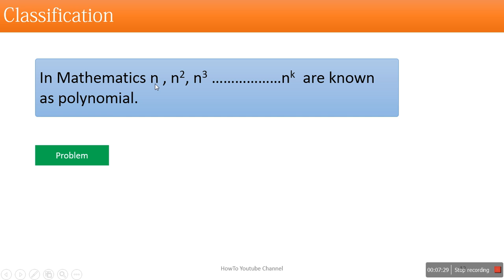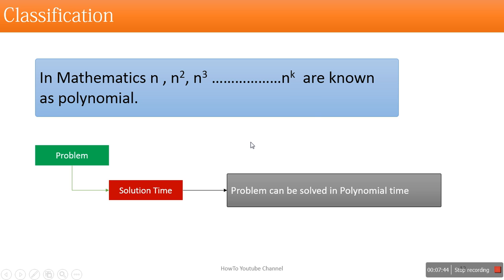So if a complexity is represented like n, n squared, n cubed, or n to the power k, these are known as polynomial. If a problem can be solved in polynomial time — like the first problem we saw, finding a minimum element in an array, which had complexity n — those problems are categorized under P class problems.